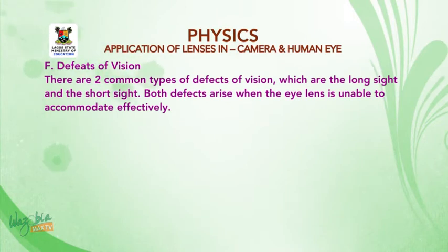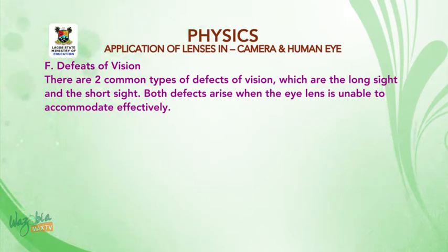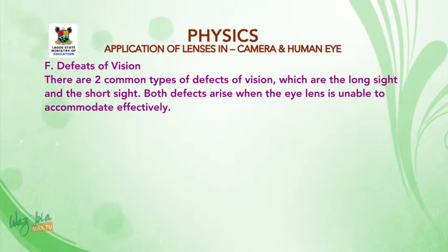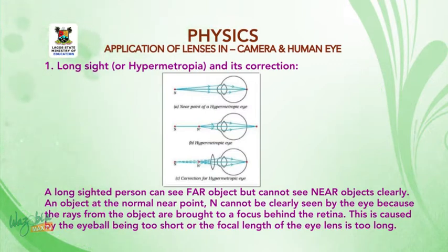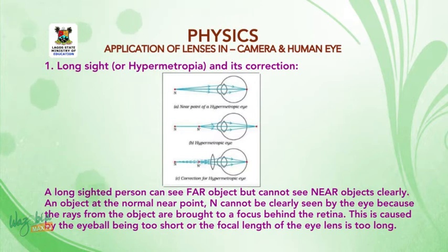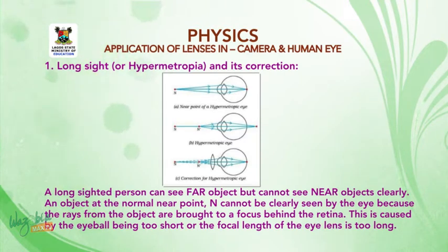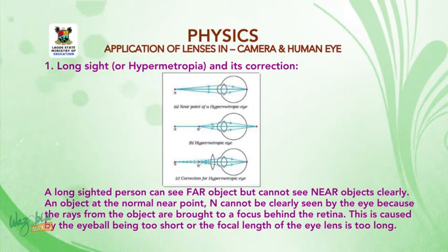Let's look at the defects of vision. There are two common defects of vision: long sight and short sight. Both defects arise when the eye lens is unable to accommodate effectively. Long sight, also known as hypermetropia: a long-sighted person can see far objects but cannot see near objects clearly. The rays from near objects are brought to a focus behind the retina. This is caused by the eyeball being too short or the focal length of the eye lens being too long.